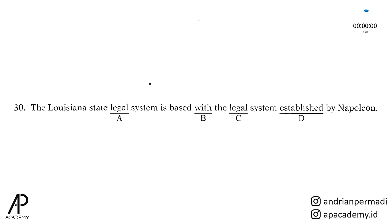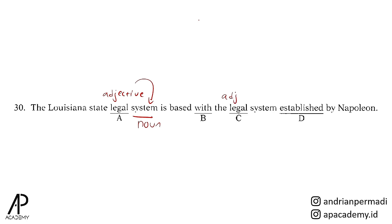Untuk nomor 30, kita lihat pilihan A: legal. Legal adalah adjective. Dalam hal ini masih benar karena legal menjelaskan system yang merupakan noun. Pilihan C, legal system juga masih benar dengan penjelasan yang sama: legal sebagai adjective menjelaskan system sebagai noun. Establish di sini muncul setelah system sebagai noun; bisa disimpulkan bahwa establish ini adalah past participle atau kata kerja bentuk ketiga karena setelah establish muncul by yang berfungsi sebagai preposition.